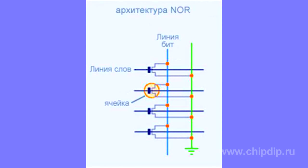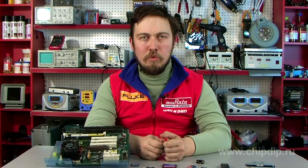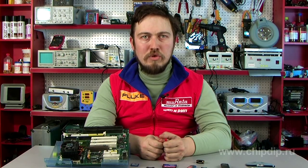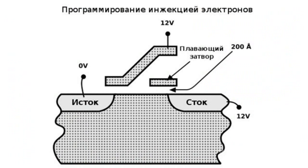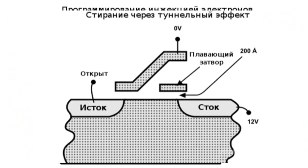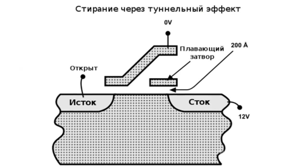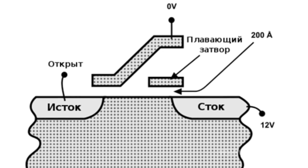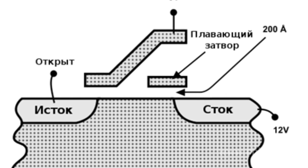The floating gate is insulated all around and can hold electrons for 10 years. Each cell has the source and the drain. By programming, the voltage supplied across the control gate forms an electric field and quantum tunneling arises. Some electrons tunnel through the insulation layer and get onto the floating gate, where they stay. To erase data, a large voltage of the opposite polarity is applied onto the control gate, pulling the electrons off the floating gate to the source.